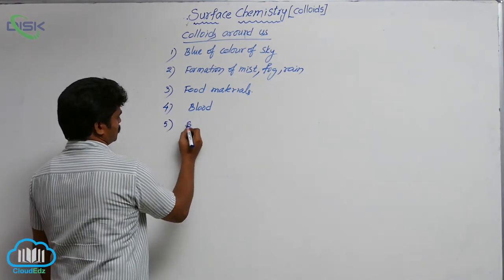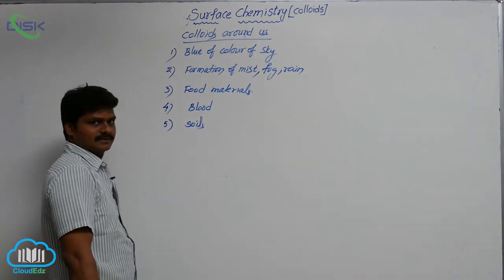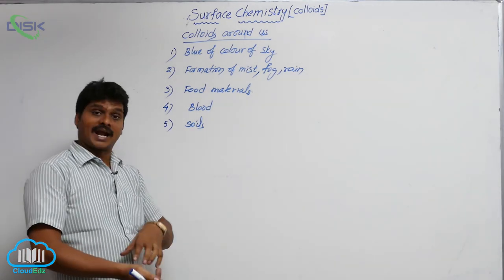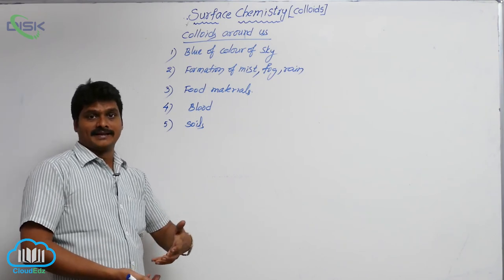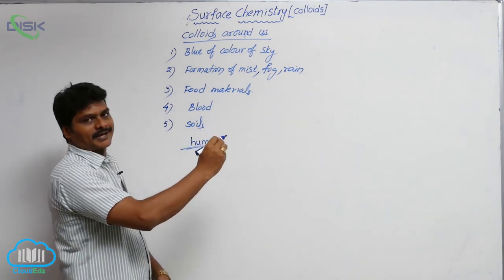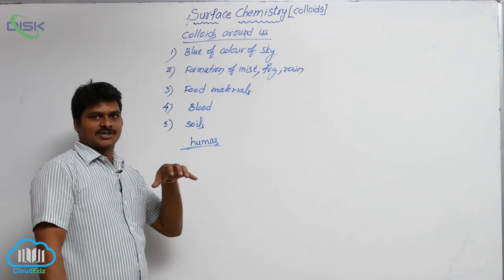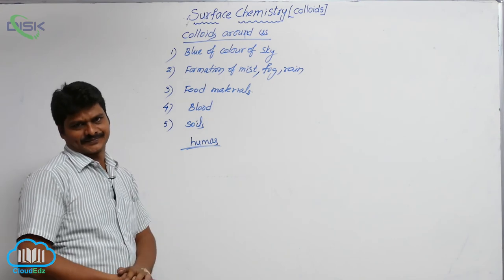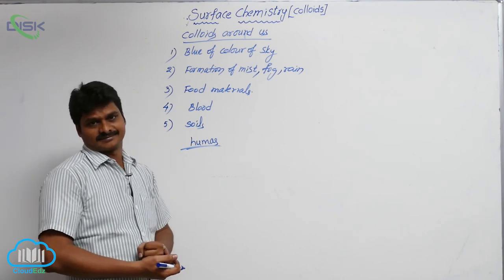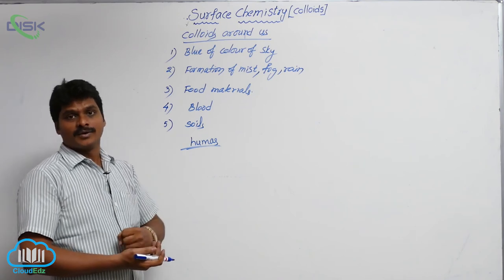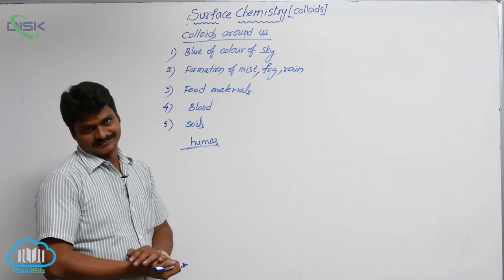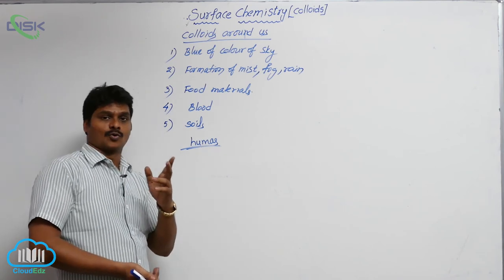The fifth example is soils. Fertile soils are colloidal in nature. They contain a substance called humus. Because of this humus, the colloidal solution can absorb moisture and take up nourishing materials, which can then be supplied to plants for their healthy growth. So soils are also colloidal solutions.